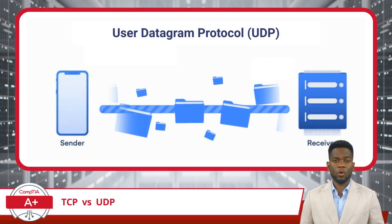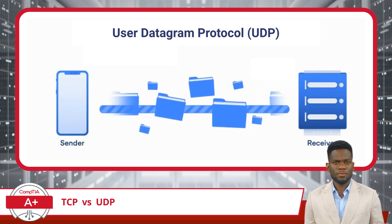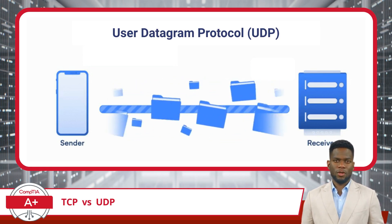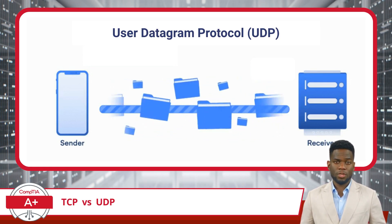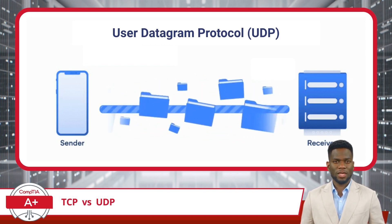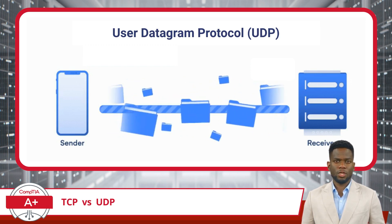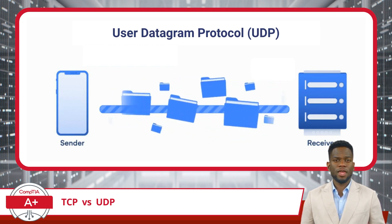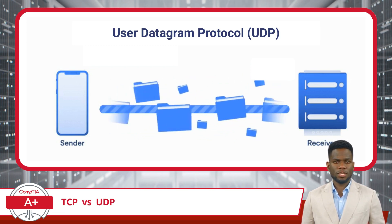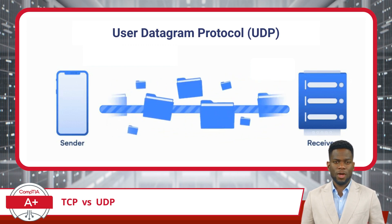UDP, or User Datagram Protocol, on the other hand, is more like sending a postcard. It's fast and efficient but doesn't guarantee that the postcard will reach its destination. UDP sends packets without establishing a connection, making it faster but less reliable than TCP. It's used when speed is more critical than accuracy, like live video streaming or online gaming, where receiving data quickly is more important than getting every single packet.